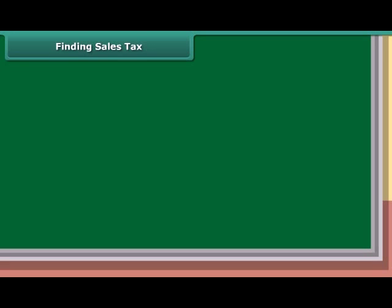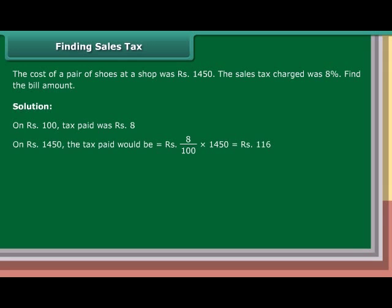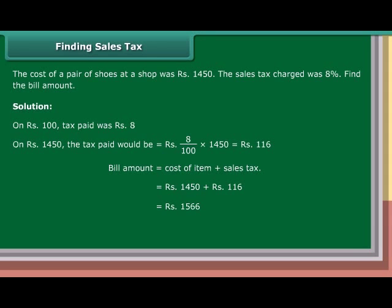Finding Sales Tax: The cost of a pair of shoes at a shop was Rs. 1,450. The sales tax charged was 8%. Find the bill amount. Solution: On Rs. 100, tax paid = Rs. 8. On Rs. 1,450, tax = 8/100 × Rs. 1,450 = Rs. 116. Bill amount = Rs. 1,450 + Rs. 116 = Rs. 1,566.